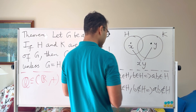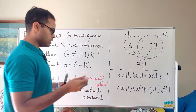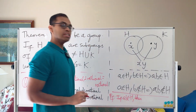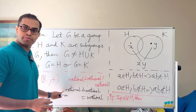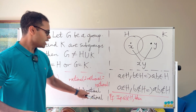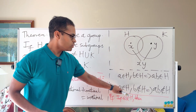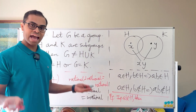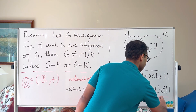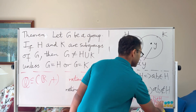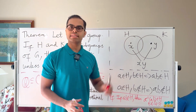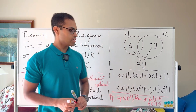The same principle applies in our general setting. Assume for a contradiction that ab is in H. Then, using closure of H under multiplication and inverses — because it's a subgroup — we get that a⁻¹ times (ab) is also in H, but that is just b. That's a contradiction, since b is not in H. So ab cannot be in H.